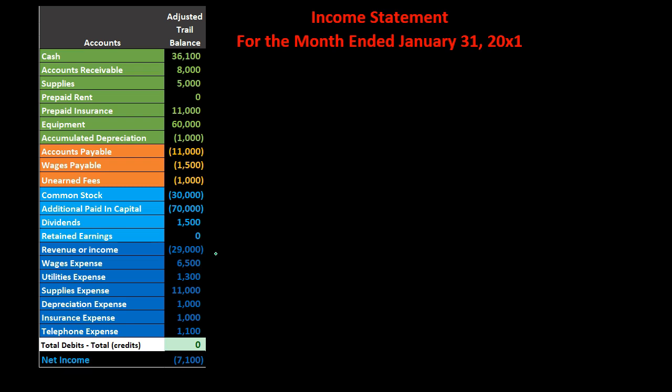The top line of the income statement is going to be revenue or income. It could be called different things depending on the type of business — fees earned for a service company, or sales or revenue if we sell merchandise. We're not going to bring it into the inner column because there's only one income line item. If we had more than one type of income we would use a subcategory, but typically income accounts will be fairly limited. So we're going to put it in the outer column with no subcategory.